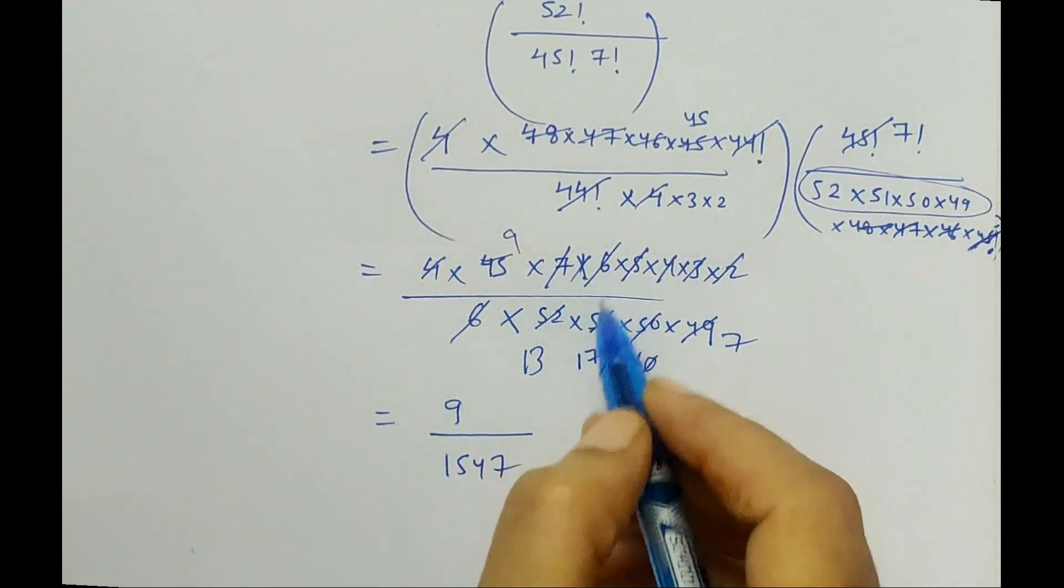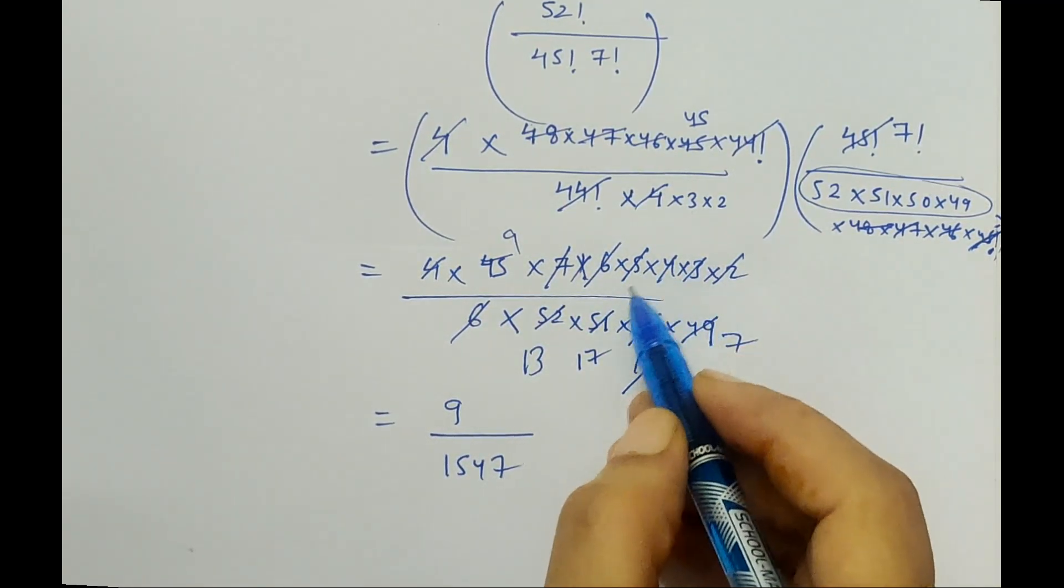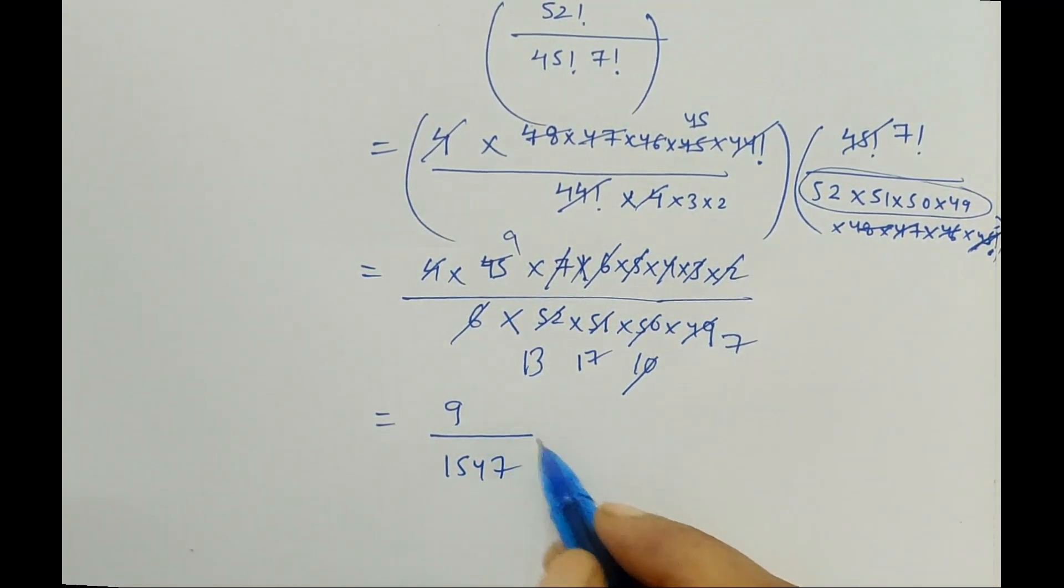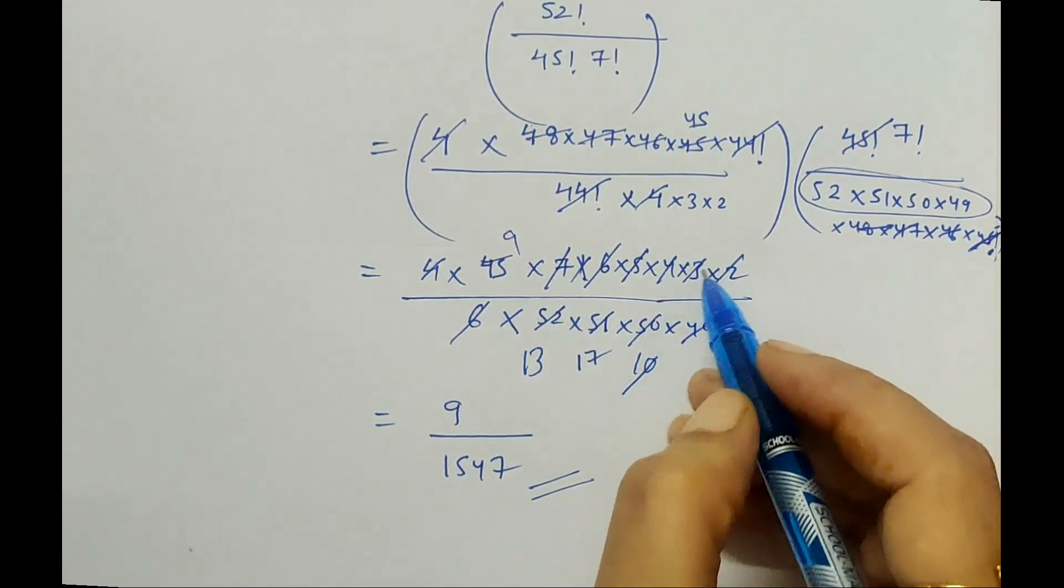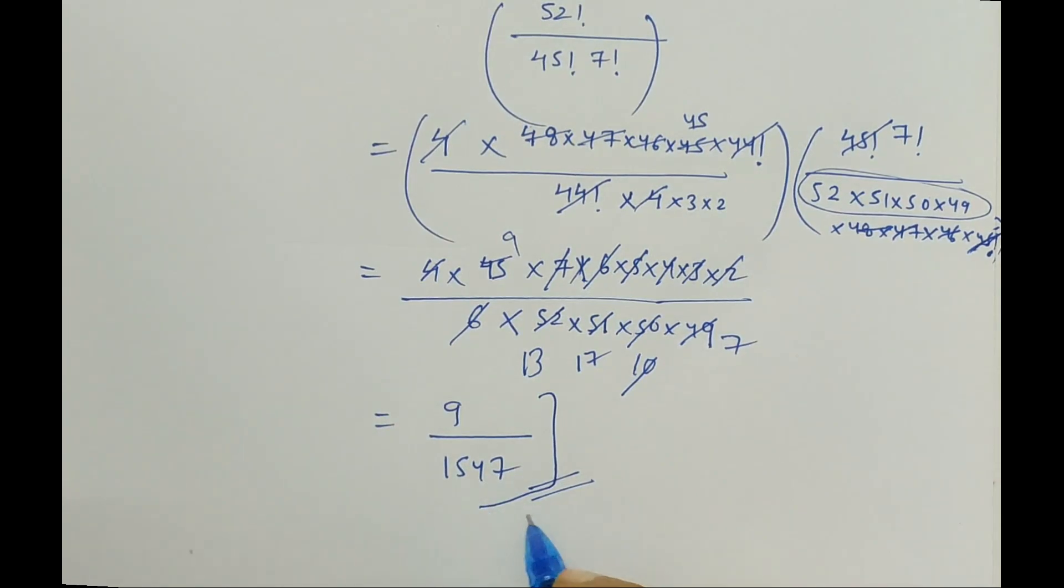On further simplification, when we cancel it continuously, whatever is having common factors in the numerator and denominator, we will be left with 9 upon 1547. So just cancel it one by one and get it simplified to this step.